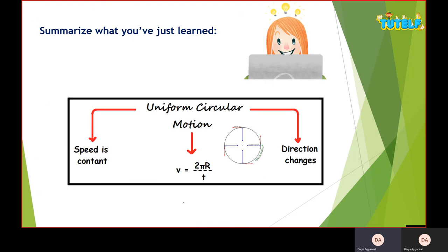Let's do a quick revision about this. So in uniform circular motion the speed is constant, the formula is v equals 2πr by t where r is the radius of the circle, and in this the direction of the motion of the particle continuously changes.